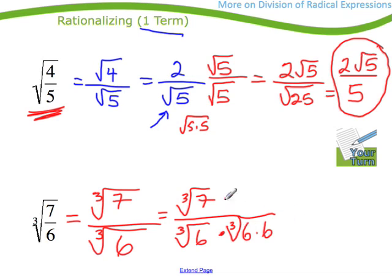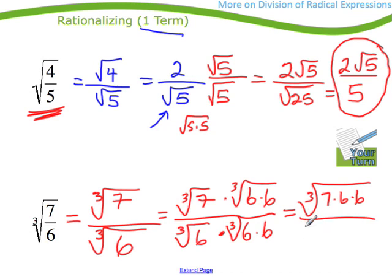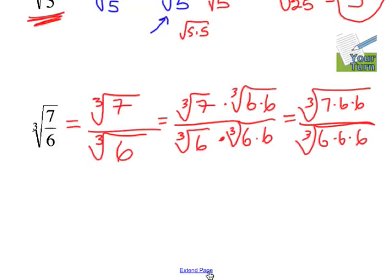And if I do that on the bottom, of course I have to do that on the top, factor of 1 trick. So on the top, I'm going to get the cube root of 7 times 6 times 6, whatever that works out to, over, I'll get the cube root of 6 times 6 times 6. Notice that at this point here, 6 times 6 times 6, the cube root of that, will simply be plain old 6. And then on the top, I'm going to have the cube root of whatever 7 times 6 times 6 is.